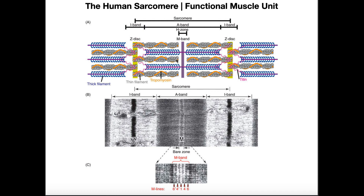A helpful way to think about the sarcomere is like a basketball court. Each Z-disc represents the boundary on either side of a goal — one team's goal on one side, the other goal on the other side, with a boundary you can't cross. That's the length of the basketball court. And then the half-court line in the middle is the M-line or M-band.